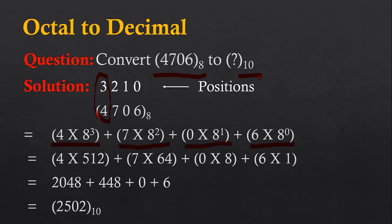So 4706, which is an octal number, has a decimal equivalent value of 2502, as written at the bottom of this slide. It is easy to convert octal to decimal using the same formula as we used for binary to decimal.